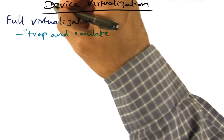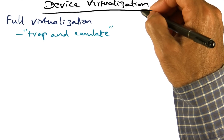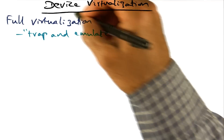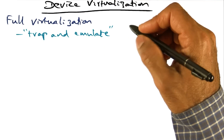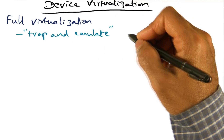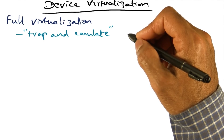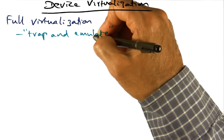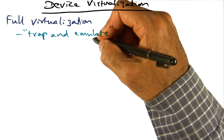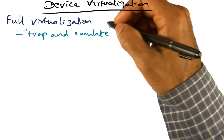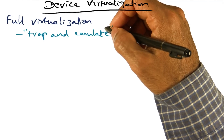In the case of full virtualization, the operating system thinks that it owns all the devices already. The way devices are virtualized is the familiar trap and emulate technique. For the devices that the operating system thinks it owns, when it tries to make any access to those devices, it's going to result in a trap into the hypervisor, and the hypervisor will emulate the functionality that the operating system intends for that particular device.